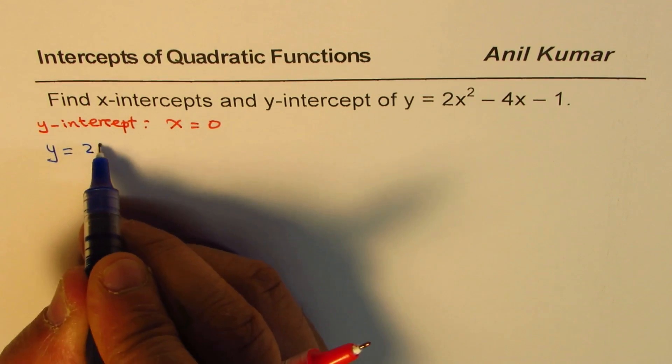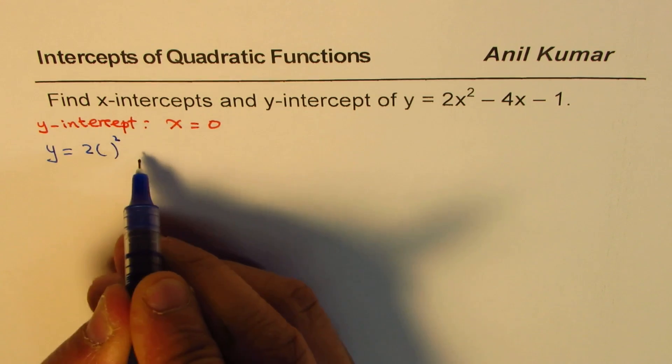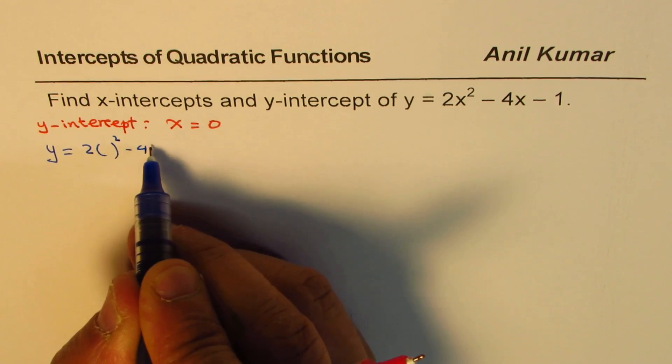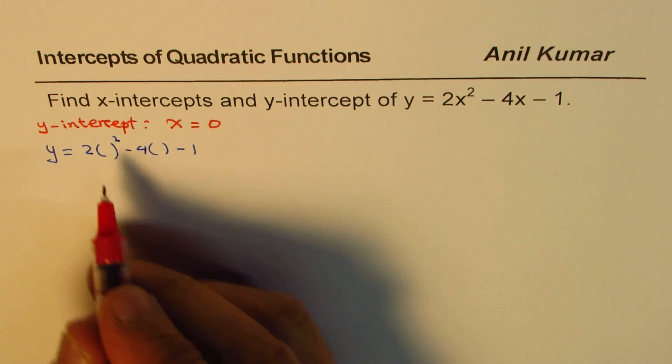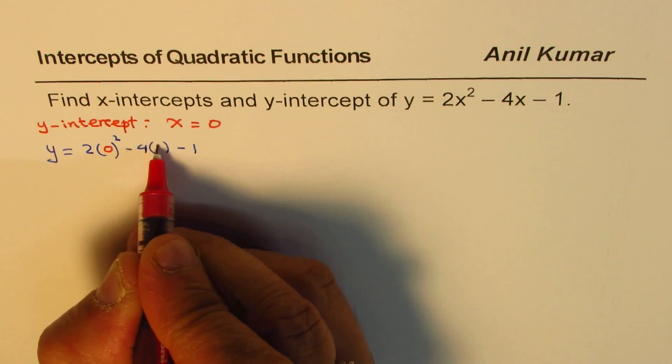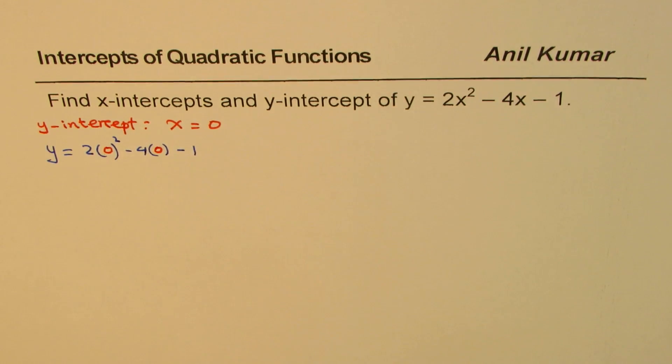So we have y equals 2 times that value has to be 0. That is what we have. So this value has to be 0 to get the y-intercept. So just write 0 for x and then calculate.